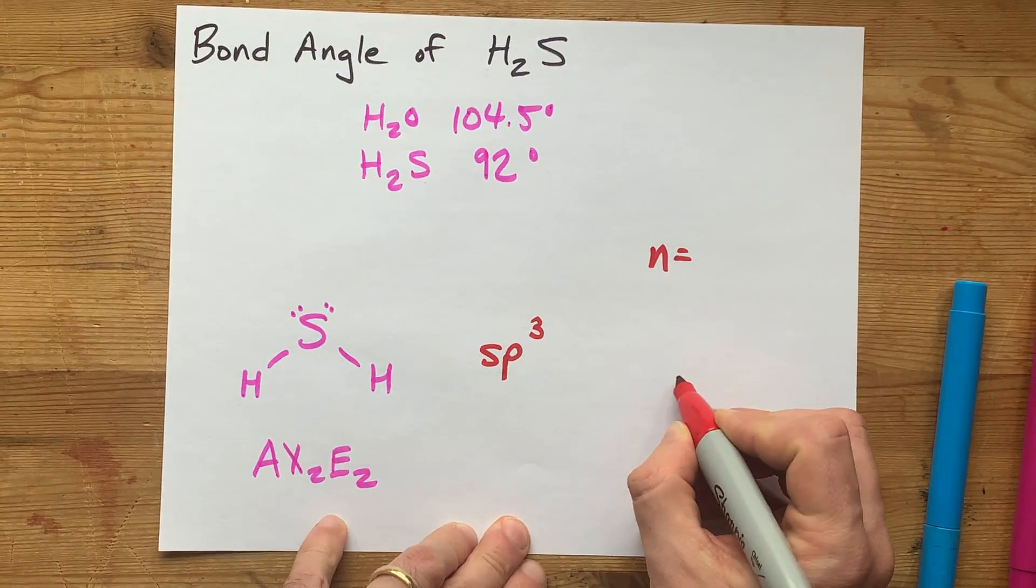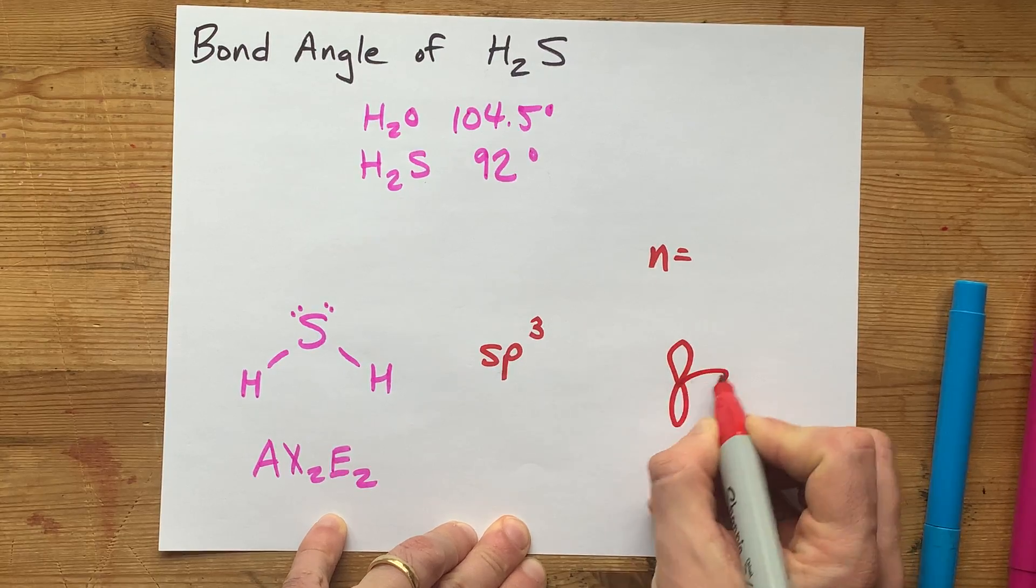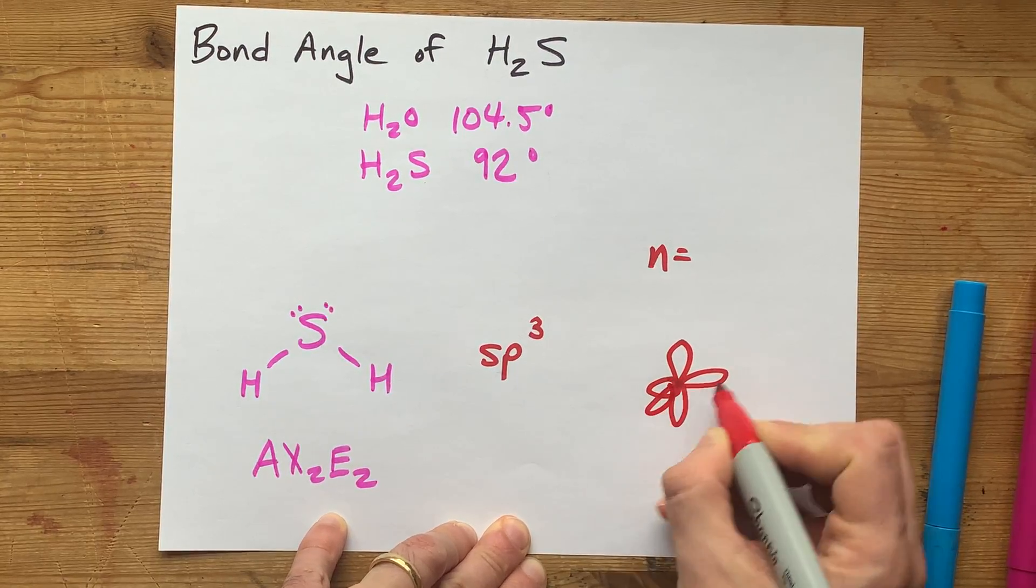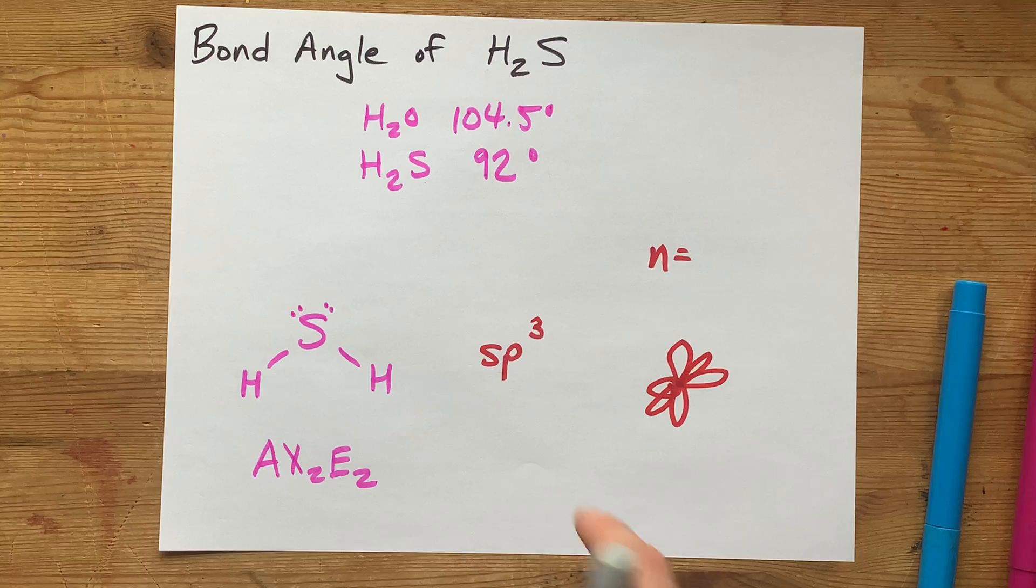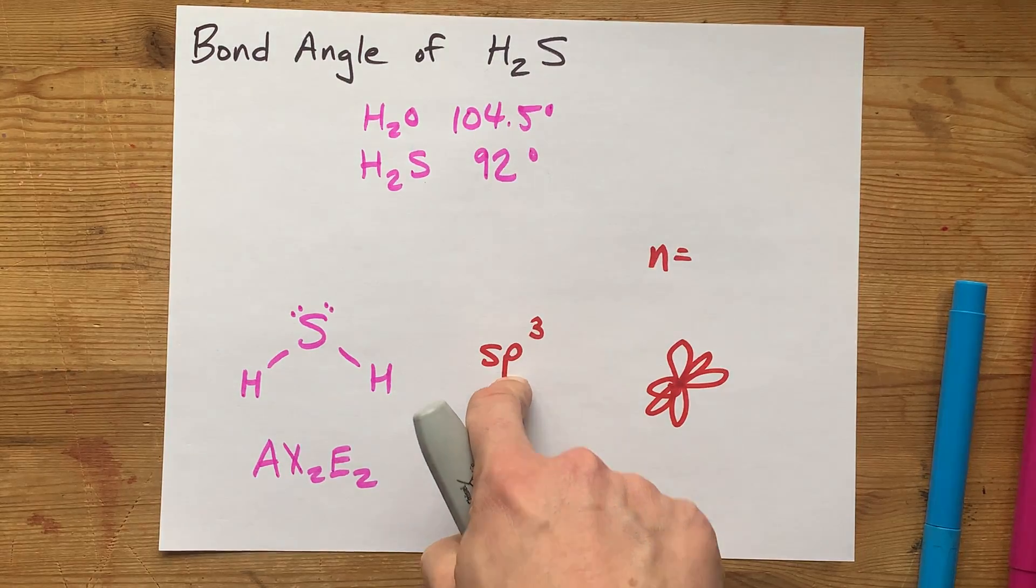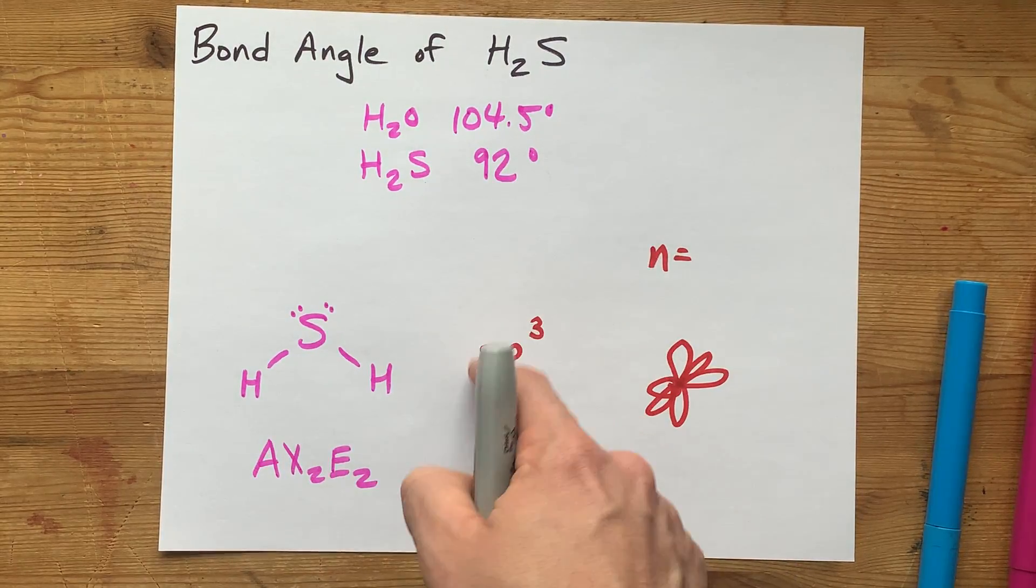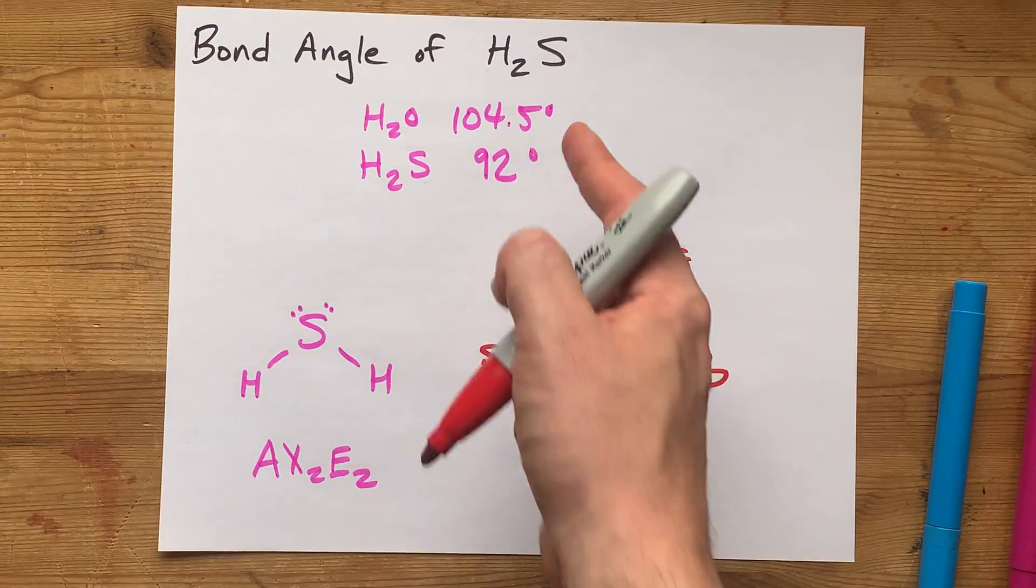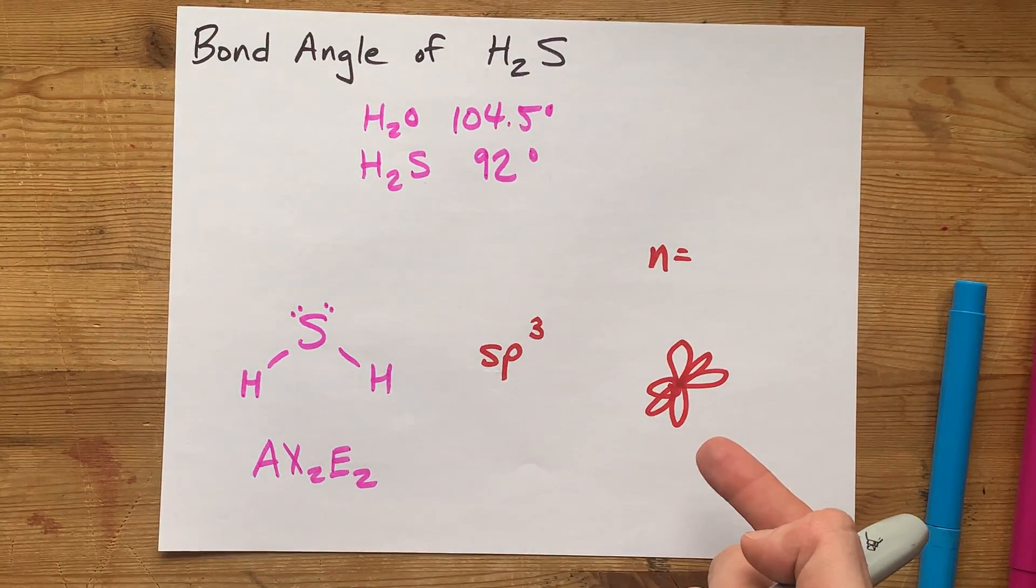P orbitals, as you'll recall, align themselves along the X, Y, and Z axis. And so the more P character the hybridized orbitals have, the closer the angles are actually going to be to 90 degrees.